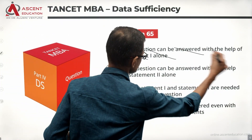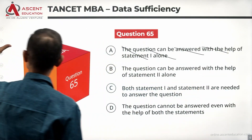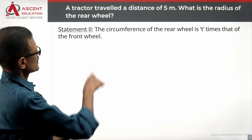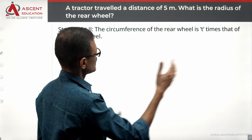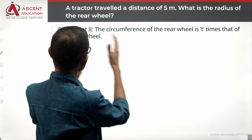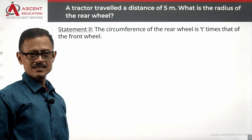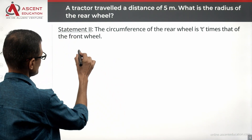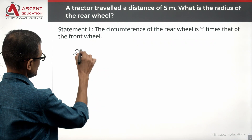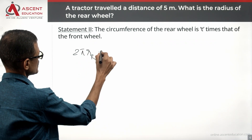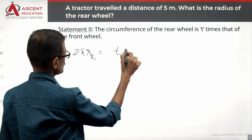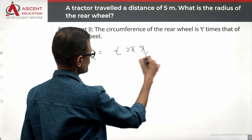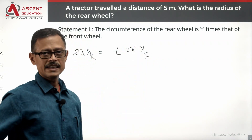Let's rule out that answer option. Let's see whether Statement 2 alone will help us. Here we say the circumference of the rear wheel is t times the front wheel. So circumference of the rear wheel — 2π·rr — is equal to t times 2π·rf, where rf is the front wheel radius.